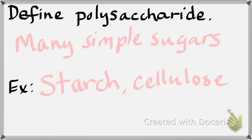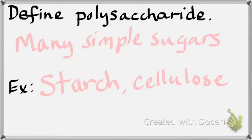What is the common energy storage form of glucose in plants? How do they store their glucose? Starch. The answer is starch. What structures of a plant cell store starch? Starch grains — that's what's going to be on your test, even though botanists call them amyloplasts.